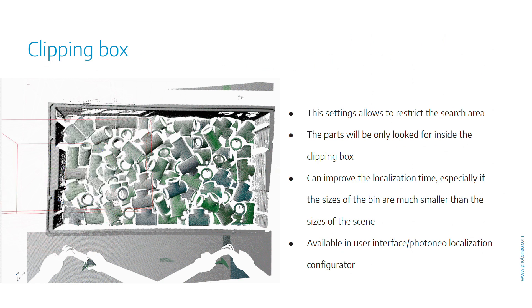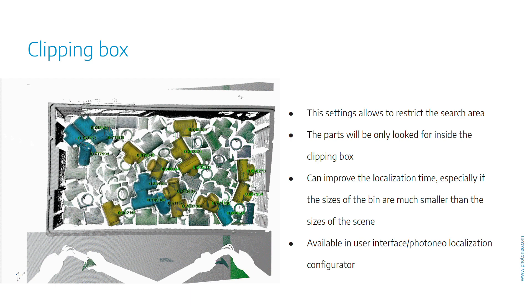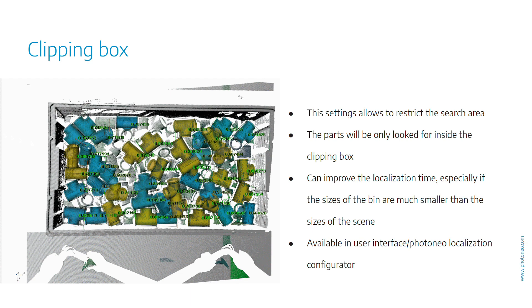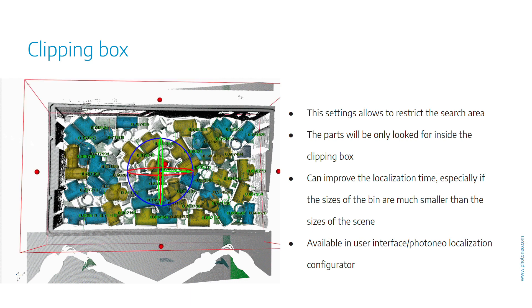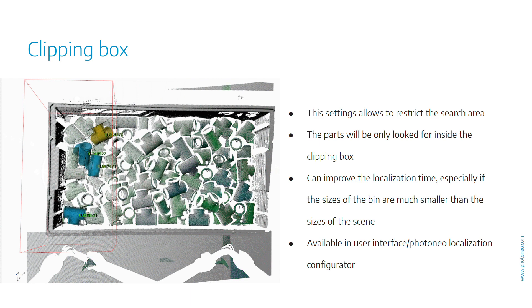The first major change is a function called clipping box. During the localization process the whole scanned area is searched for the objects. This can take quite a time, especially in the situation where the scanner sees more than just the object that you want to find. Therefore we introduced a scene clipping box. Now you can easily define the volume where your objects are placed and the localization will focus only on that specific area.